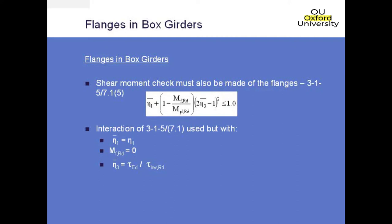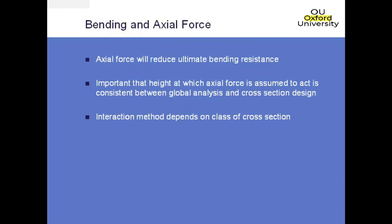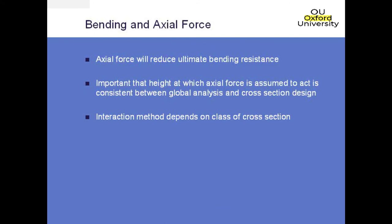Moving on to bending and axial force within the section. Generally speaking, the presence of axial force will reduce the ultimate bending resistance of a cross section where the parts that contribute to the bending resistance are also required to resist the axial force. If you do have an axial force, it is important to be consistent between the global analysis and the cross section design, particularly with respect to the height at which the axial force is assumed to act. If the axial force is acting slightly eccentrically to the centroid, you will end up with additional moments being caused by that axial load, and those moments do have to be taken into account in the design.